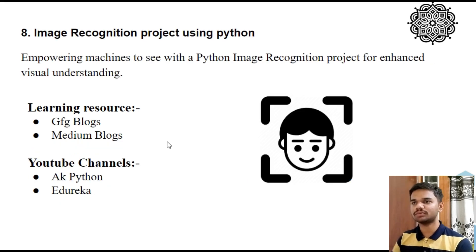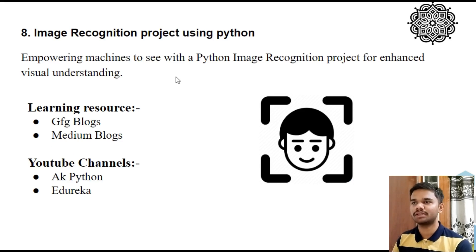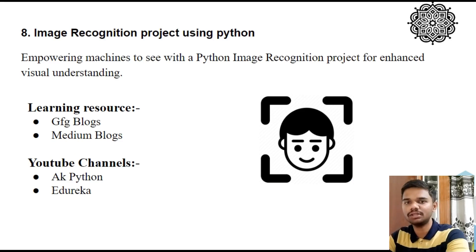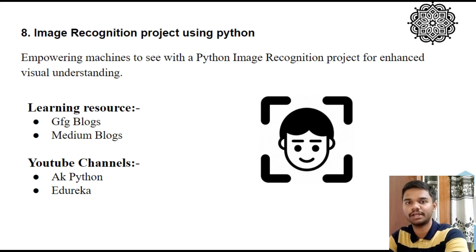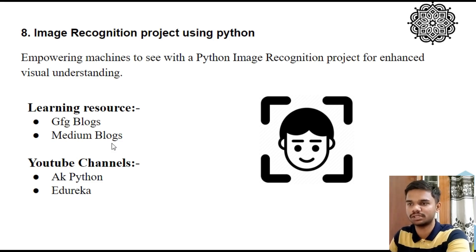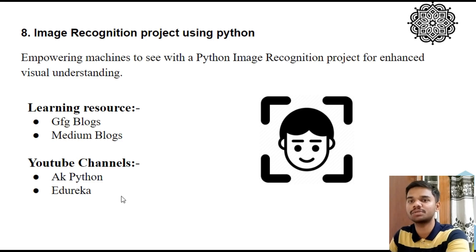The next project is an image recognition project using Python. Image recognition means identifying objects in images — this is a very in-demand project, as it helps machines identify objects just as humans do. The learning resources are GFG blogs and Medium blogs. The best YouTube channels are Aakash Python and Edureka — Edureka is the best option to learn image recognition or object detection projects.